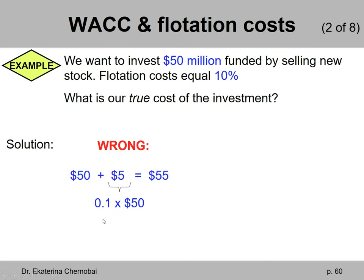Unfortunately, while the idea is correct, the calculations are wrong. Think about going backwards: we raise 55 million by selling additional shares of stock, and flotation cost of 10% means that 10% of 55 million will be gone, paid to the third party helping us through this issuing process. 10% of 55 million is 5.5 million. If you subtract 5.5 million from 55 million, we will be left with 49.5 million. But that's not enough for the project — we need 50 million. So 55 million worth of new stock shares is not enough.